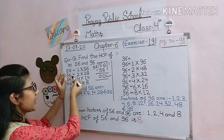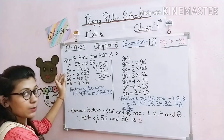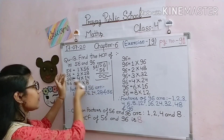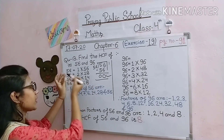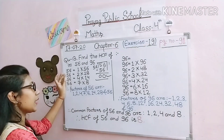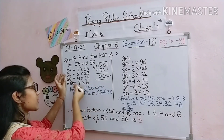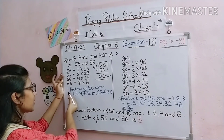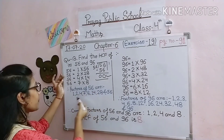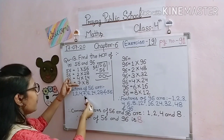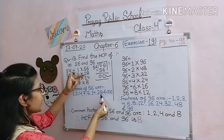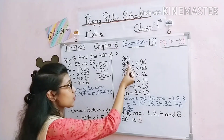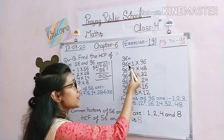56 is not divisible by 3 or 5 or 6. 4 multiplied by 14 gives 56, so 4 and 14 are factors. 7 multiplied by 8 gives 56, so 7 and 8 are factors. Therefore, factors of 56 are: 1, 2, 4, 7, 8, 14, 28, and 56.